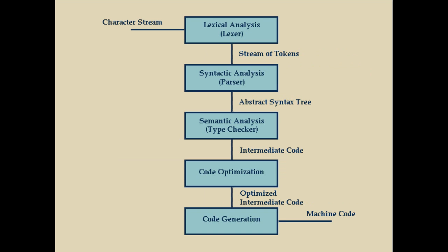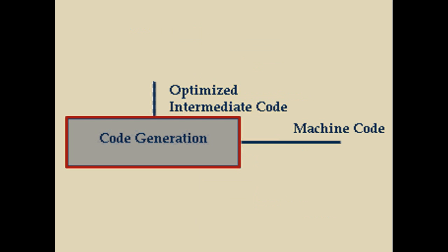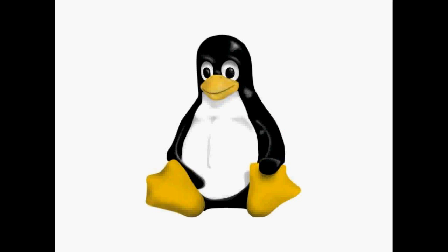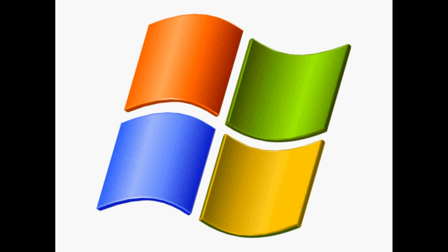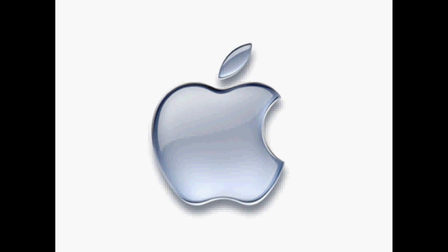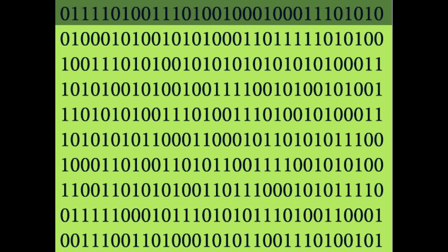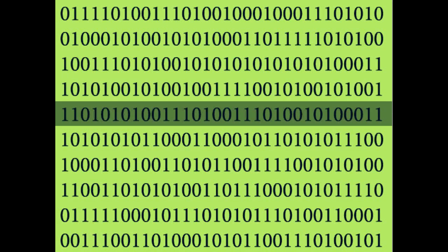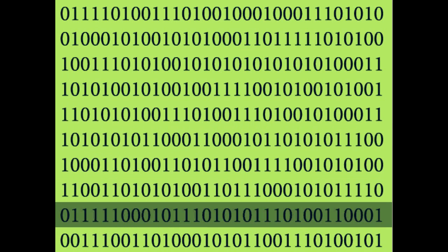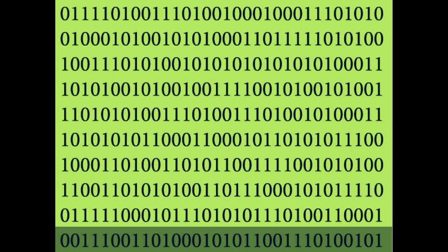Probably the most straightforward of the steps in the compilation process, code generation takes the optimized intermediate code and translates it into machine code or object code. The object code generation is what makes compilation platform dependent, as each computer might have its own set of assembly language instructions and rules. However, it's also what allows compiled programs to execute so fast, because they are transformed into these statements that your CPU can execute directly.